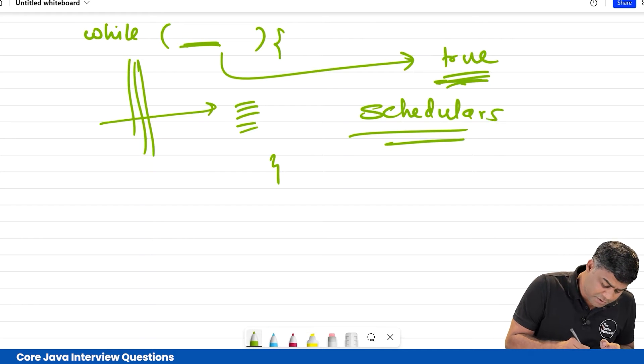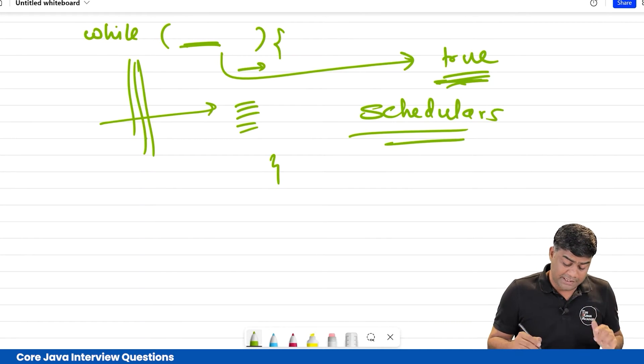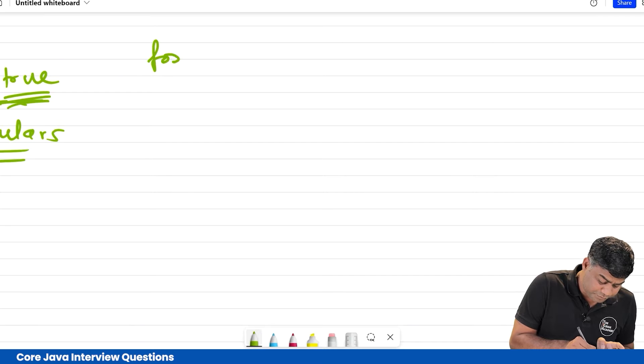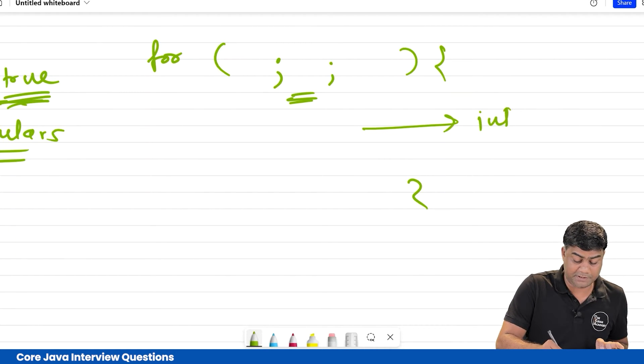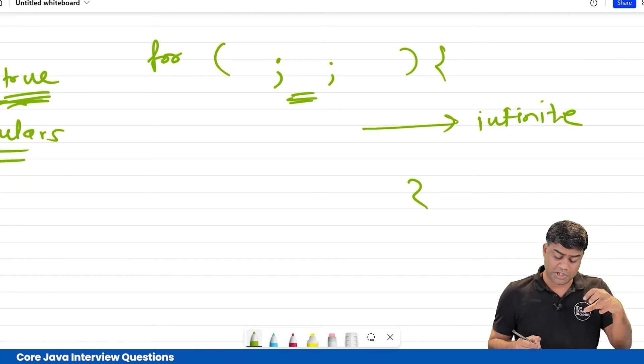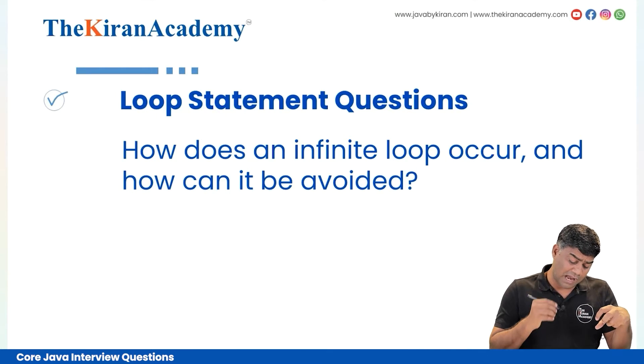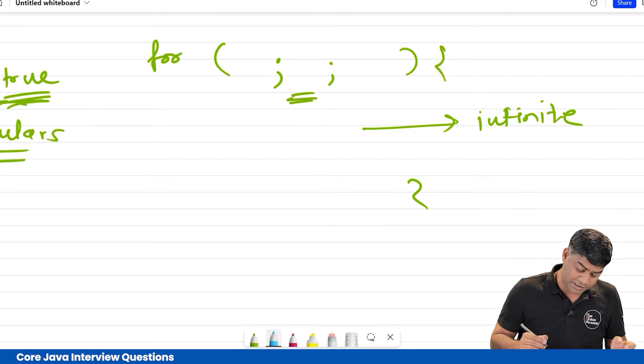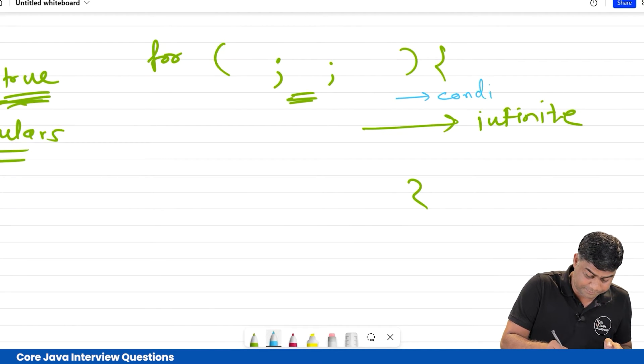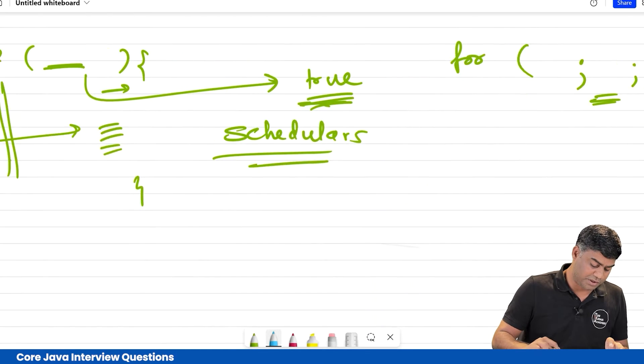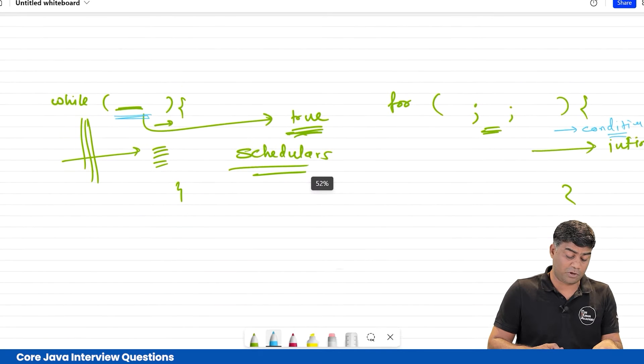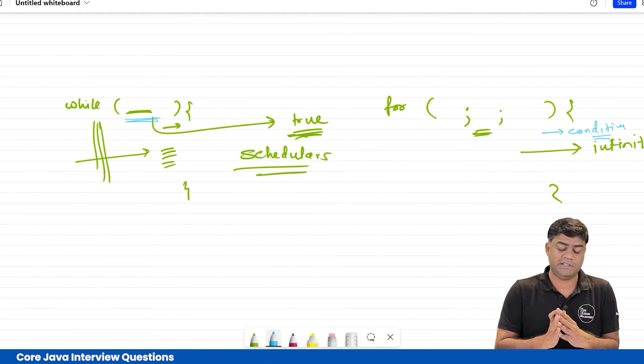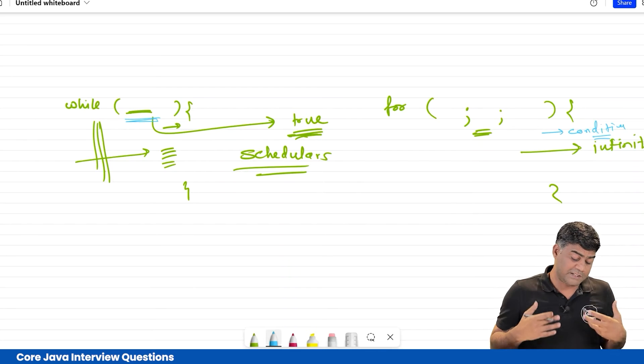Put some condition over here. And then in case of for loop, if you just write like this, don't put any condition here, means it runs infinite times. Now the question is also asking us how you can avoid this. So very simple answer is: put some condition over here which is stopping you from running infinitely. Otherwise it will keep on executing the code.